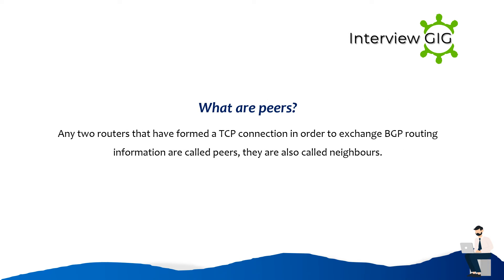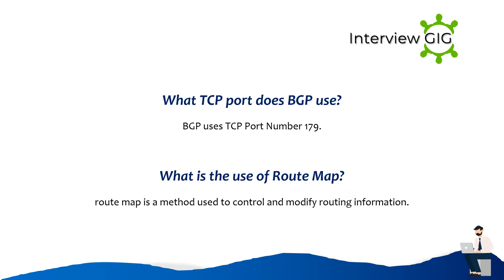What are peers? Any two routers that have formed a TCP connection in order to exchange BGP routing information are called peers. They are also called neighbors. What TCP port does BGP use? BGP uses TCP port number 179.